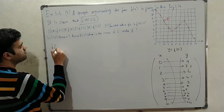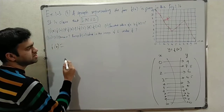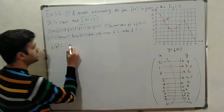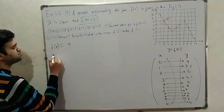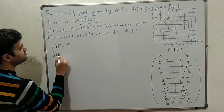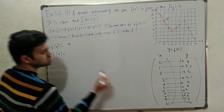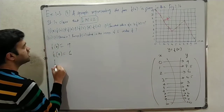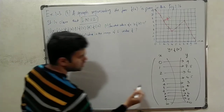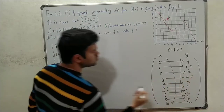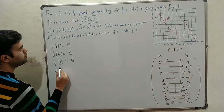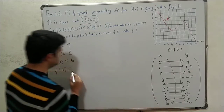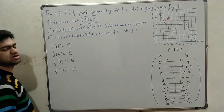First sub-question: f of 0. So f of 0 is 9, meaning y is 9. Next, f of 7 — so 7 gives 6. Then f of 2 — this 2 gives 6. Then f of 10 — so f of 10 is 0. This is the answer to the first part.